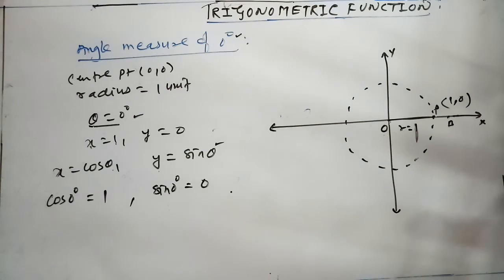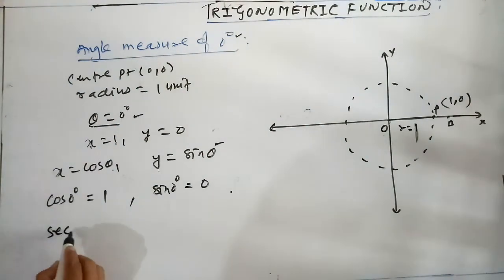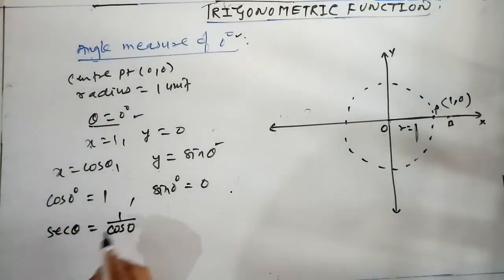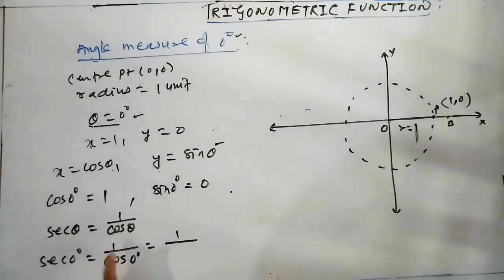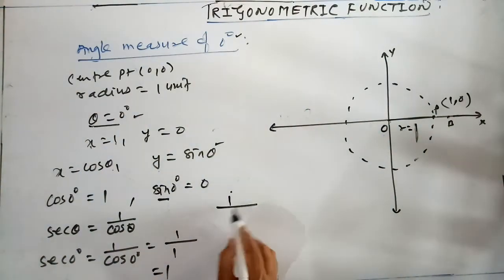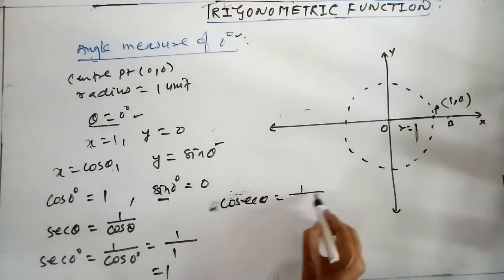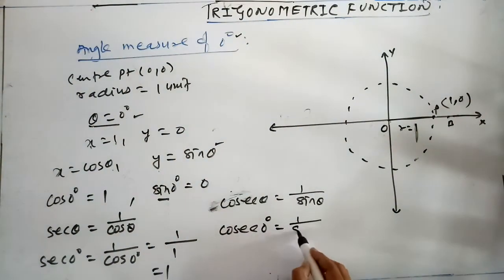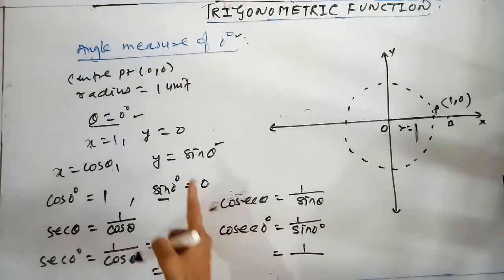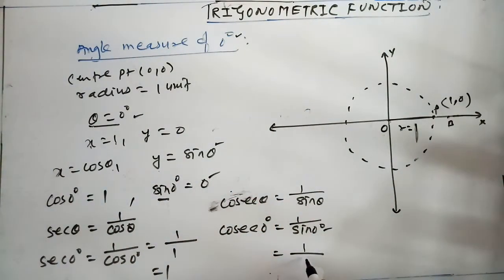cos का reciprocal sec होता है। sec θ = 1 / cos θ। theta = 0 degree पर: sec 0° = 1 / cos 0° = 1 / 1 = 1. Similarly, sin का reciprocal cosec होता है। cosec θ = 1 / sin θ। sin 0° = 0, so cosec 0° = 1/0 = infinity।